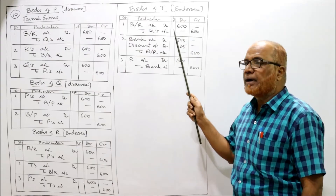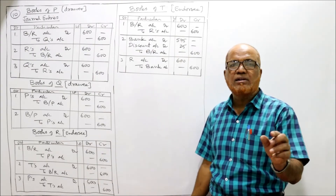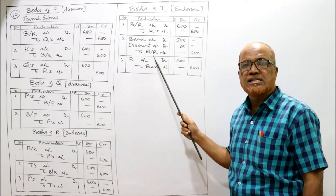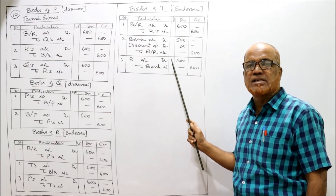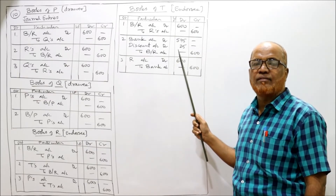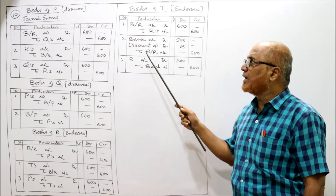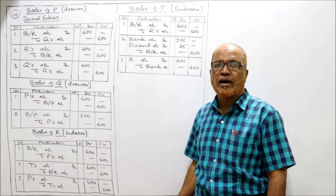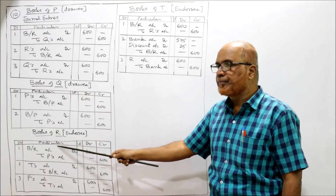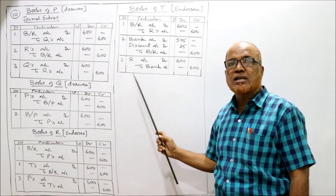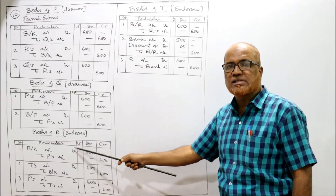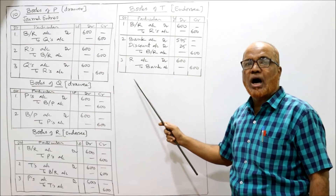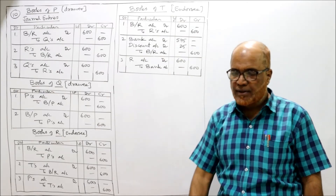In the books of T. T received the bill from R: bills receivable account debit to R's account, being the bill received. T discounted the bill with the bank: bank account debit 575, discount account debit 25, to bills receivable 600, being the bill discounted. When the bill is dishonored, T recovers from R and pays the bank: R's account debit to bank 600, being the bill dishonored.